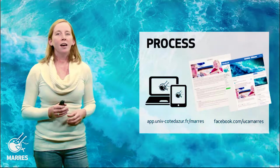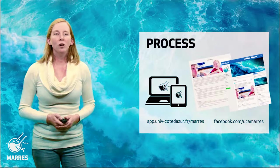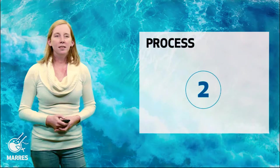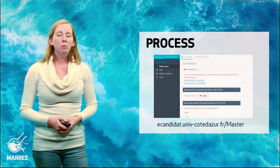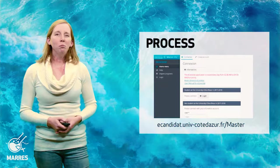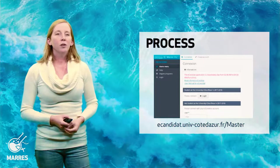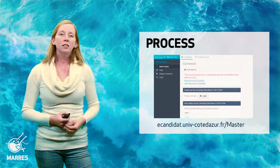On the MARES website you will find a direct link on the bottom of the page to our online platform. Our online platform is called eCandida and this will be the second step in your application procedure. There is a possibility to turn the platform into English if you click on the flag on the top right of the page. Please make sure you are on the master platform and not on the PhD platform. You also have a user manual at your disposal here in the middle of the page, in French and in English.